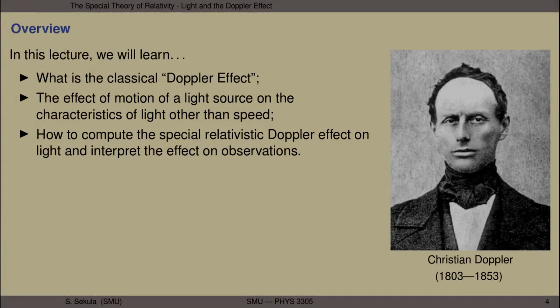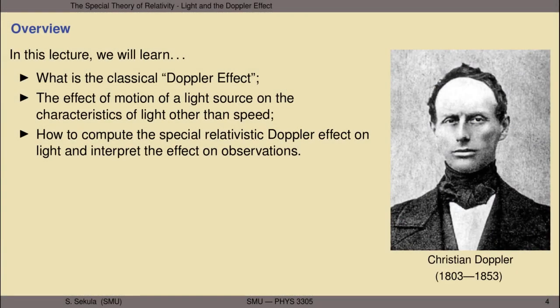In this lecture, we will learn the following things. We'll begin by learning what the classical Doppler effect is on an oscillatory phenomenon like a wave. We'll also learn about the effect of the motion of a light source on the characteristics of the light other than its speed. And finally, we will learn how to compute the special relativistic Doppler effect on light and interpret the effect on observations of the world around us.